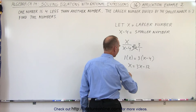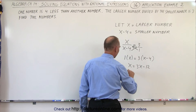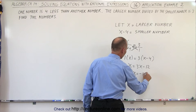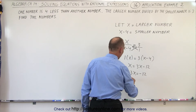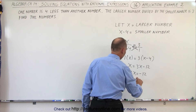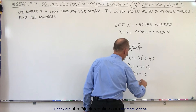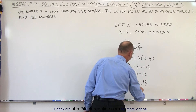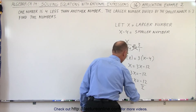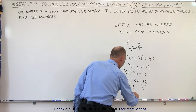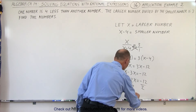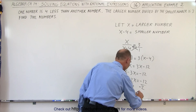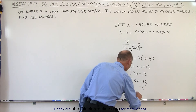Moving the 3x to the left side, x minus 3x is equal to minus 12. Minus 2x is equal to minus 12. And divide both sides by negative 2, we get x is equal to 6.